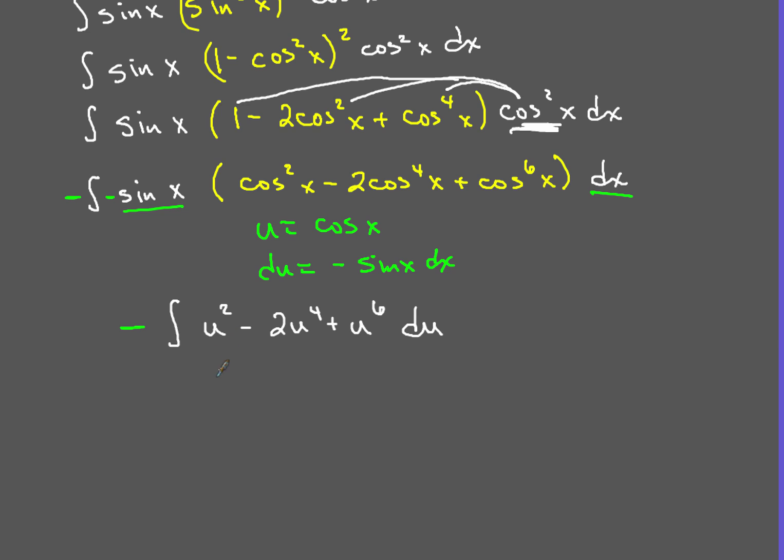So when we integrate u squared, we get negative and then one-third. So we're going to kind of distribute this negative sign here on the outside as we go along. So we're going to get negative one-third u squared, or sorry, u cubed, and then plus,